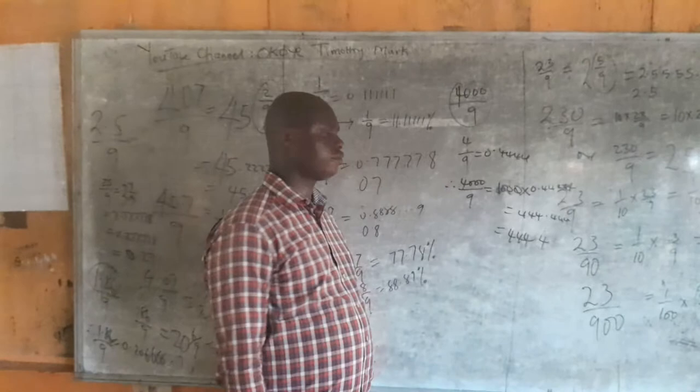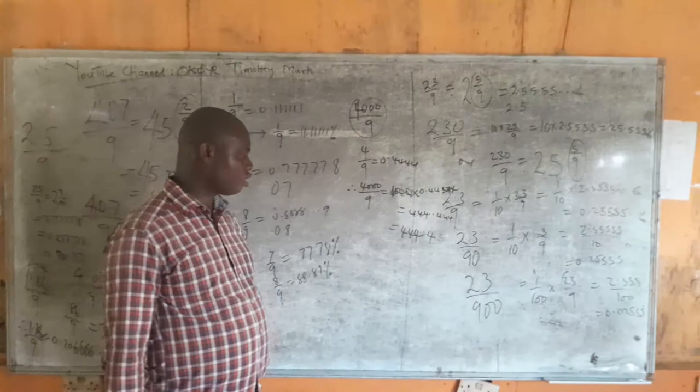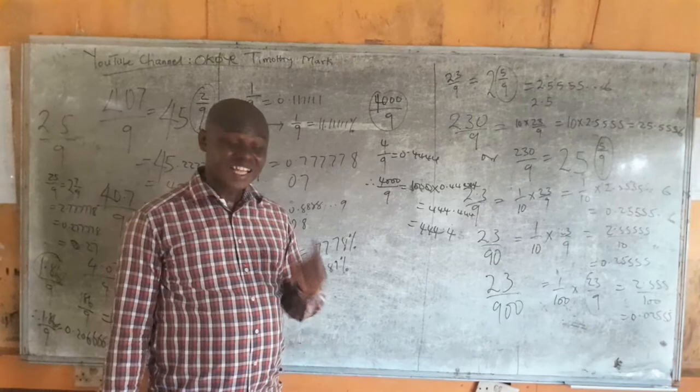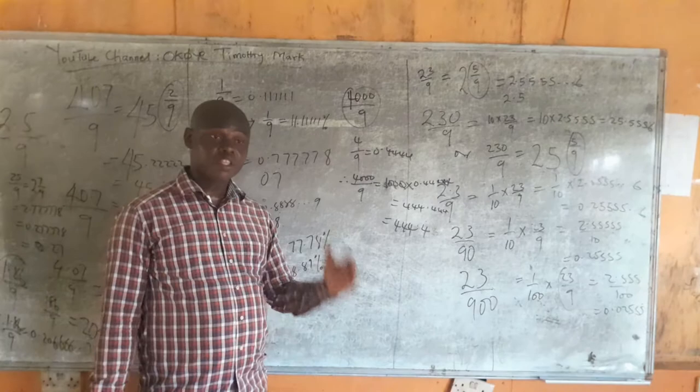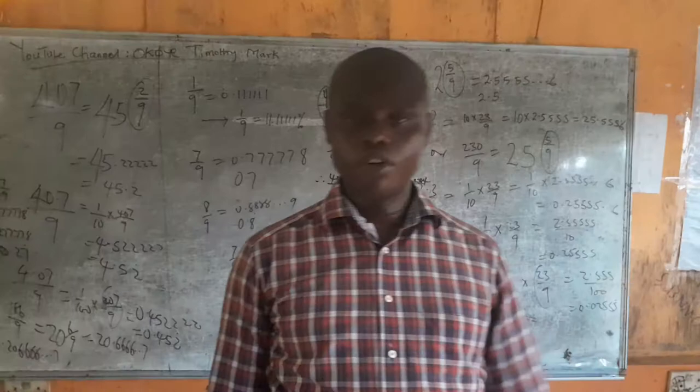Secret of division by 9. With this you can always divide any whole number or decimal by 9. Thank you and God bless you. When the secrets are given to you, you can do this faster than anybody holding a calculator and very accurately. It's something I've done over the years. I'm always faster than those operating calculators. Even if you bring 10 people holding calculators and give them questions with division by 9, I always get it faster than all of them because I know the secrets. You too can know the secrets. Thank you. Remember to subscribe, like, and comment on my YouTube channel, Okoye Timothy Mark.